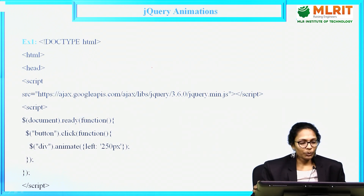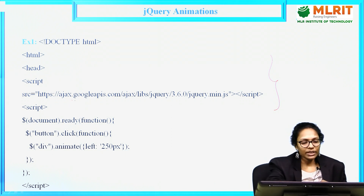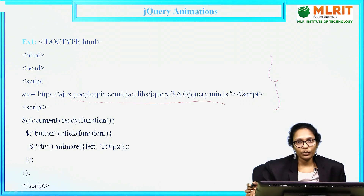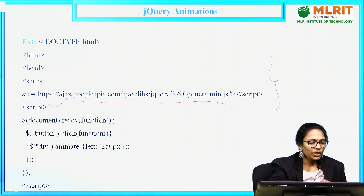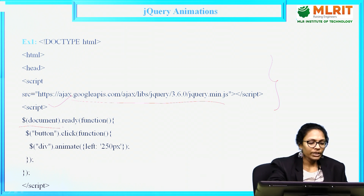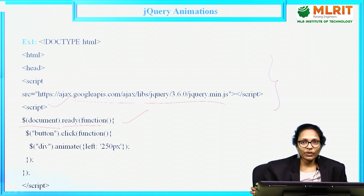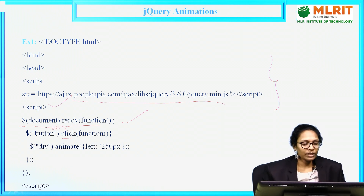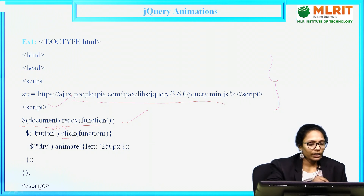We will take one example to perform animations. This jQuery library inclusion statement is common for all jQuery programs — it includes the jQuery library from the internet, that is CDN, content delivery network. Now I am applying the jQuery code within the script tag using dollar document ready, so whenever a document is ready I want to execute this function. Whenever you click on a button, we are going to apply some animations.